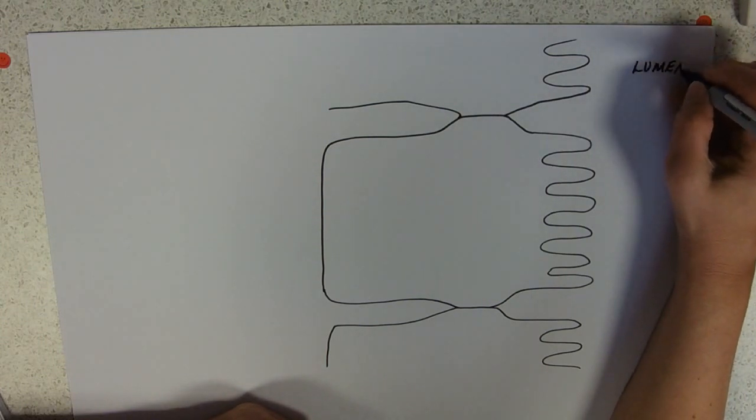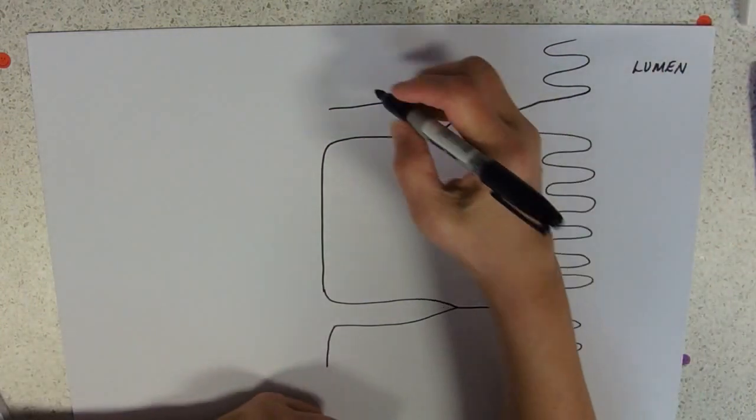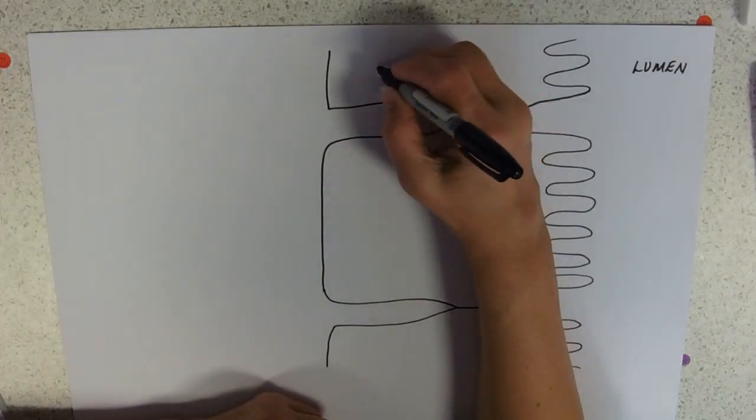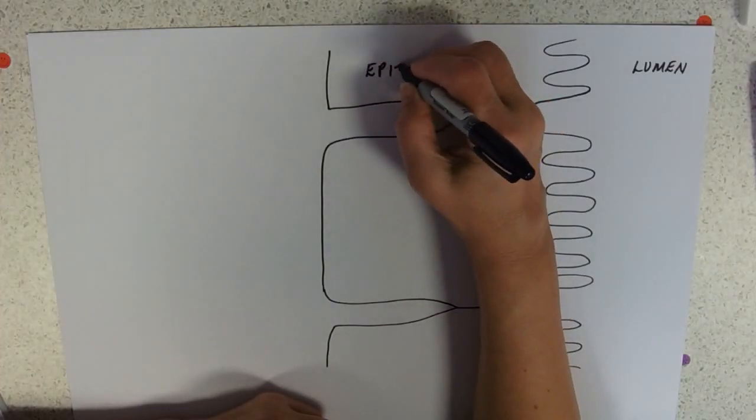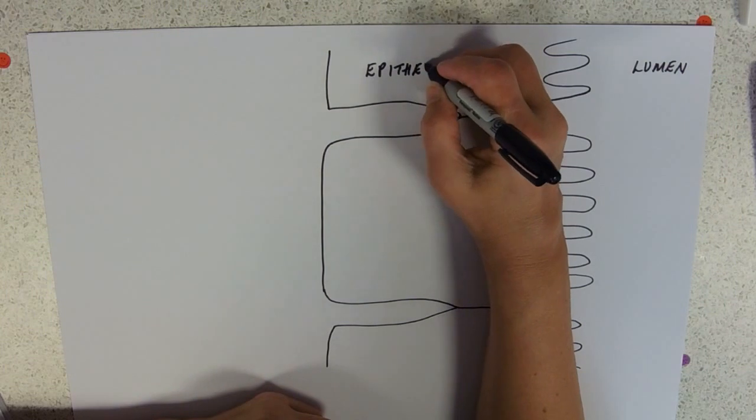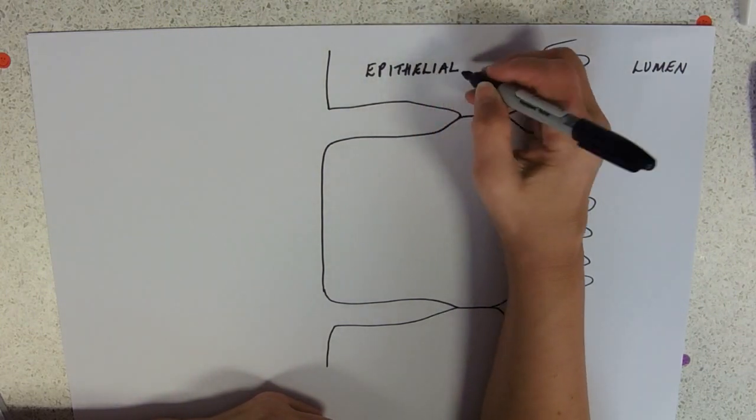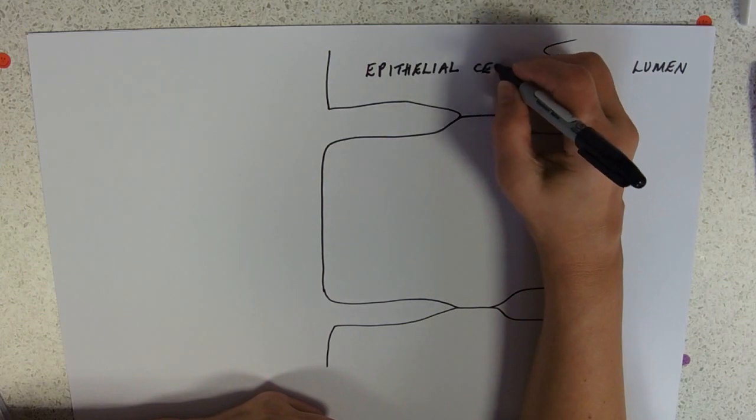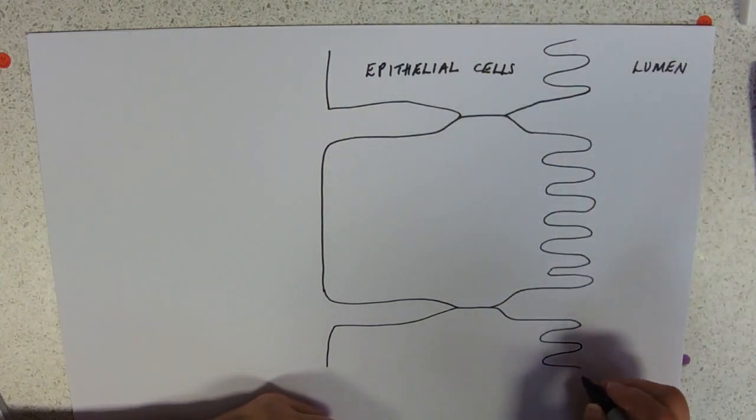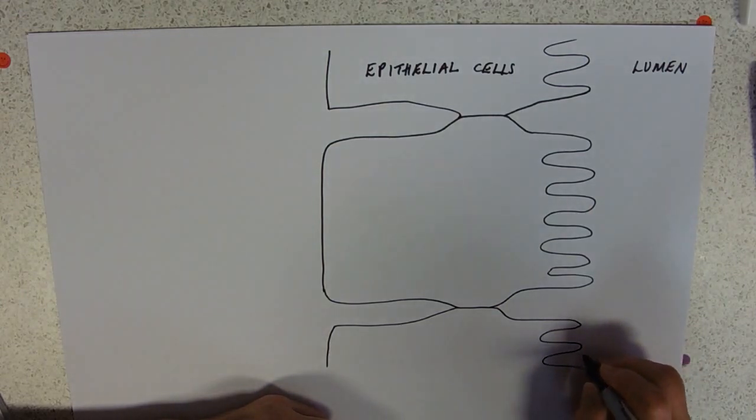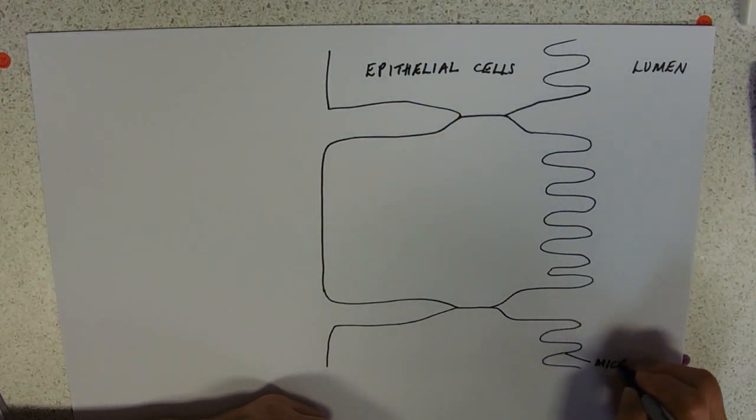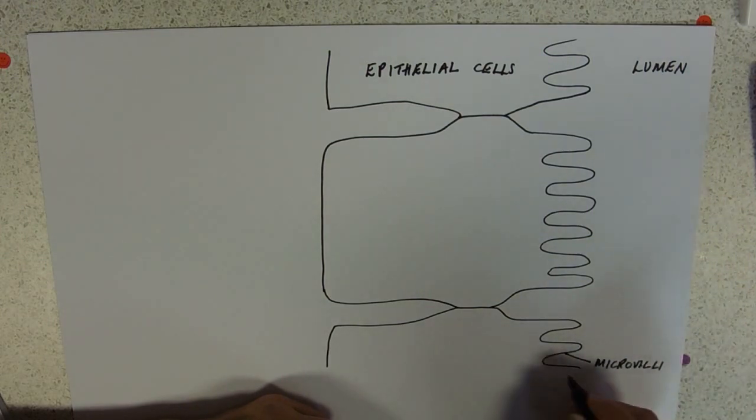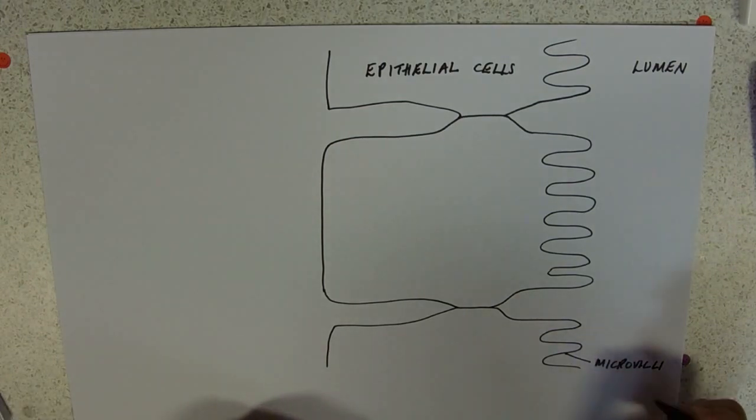This is the epithelial cells. And these cells have microvilli, remember microvilli. So these are cells on the villus, these are microvilli, these are foldings of the cell membrane.